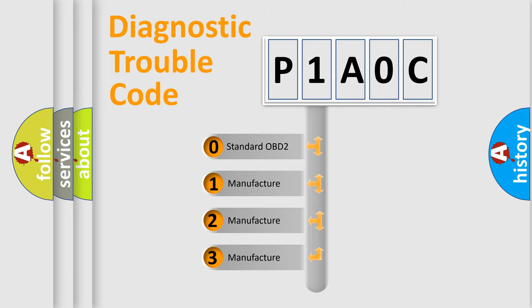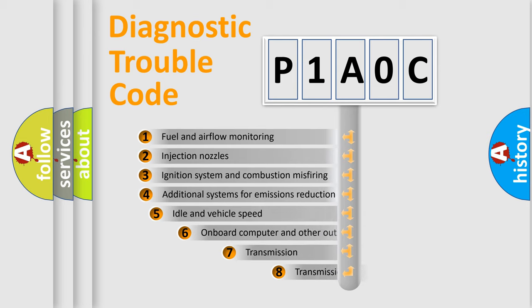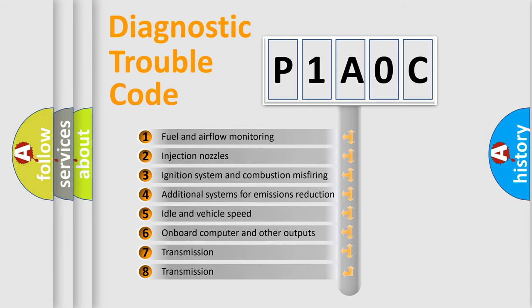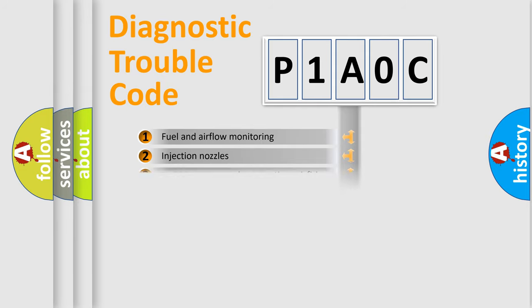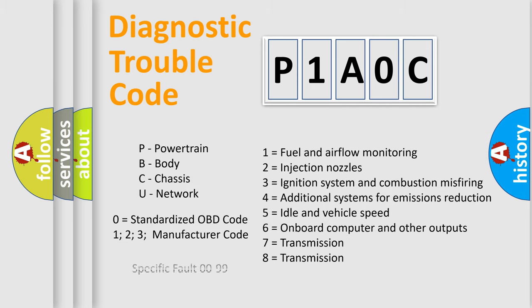If the second character is expressed as zero, it is a standardized error. In the case of numbers 1, 2, or 3, it is a manufacturer-specific error expression. The third character specifies a subset of errors. The distribution shown is valid only for the standardized DTC code. Only the last two characters define the specific fault of the group. Let's not forget that such a division is valid only if the second character code is expressed by the number zero.